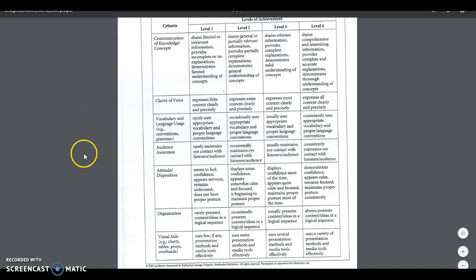Okay. So let's look at the organization here. Rarely presents ideas in a logical sequence, occasionally presents, usually, always. I feel like this might be a little bit better. I'm a little bit hesitant to use always because do we really want to expect perfection? I mean, this presentation's not perfect. I don't always present my ideas in a logical sequence. So maybe we want to change that to mostly, but I think that that's a little bit better.